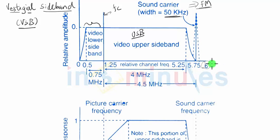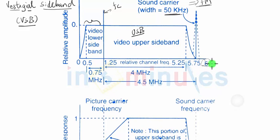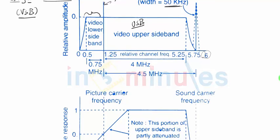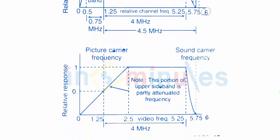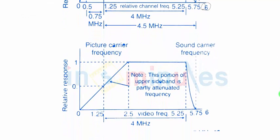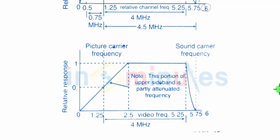So if the width is 50 kilohertz the last point will go to 6 megahertz. So starting from 0 approximately the bandwidth of TV signal will be of 6 megahertz.